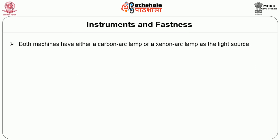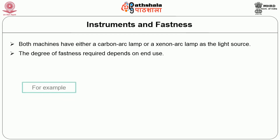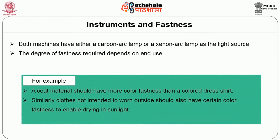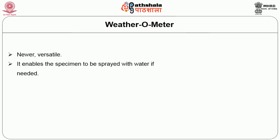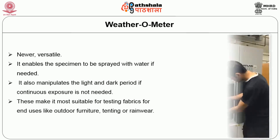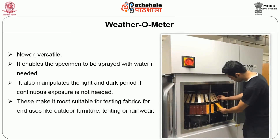Both machines have either a carbon arc lamp or a xenon arc lamp; the xenon arc lamp is costlier than the carbon arc lamp. The degree of fastness required depends on the end use — for example, coat material should have more color fastness than a colored dress. Clothes intended to be dried in sunlight should have certain color fastness. In the weather meter, we can vary water intensity, time, and light intensity for accurate assessment.